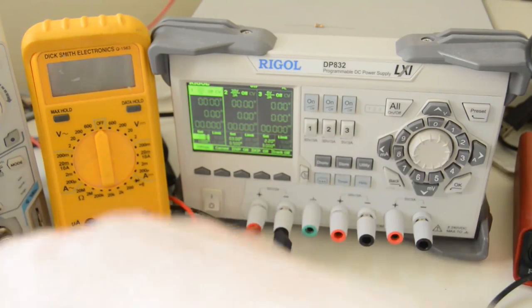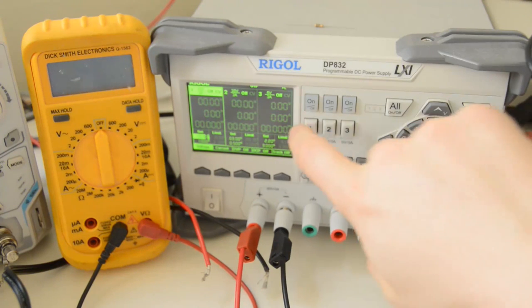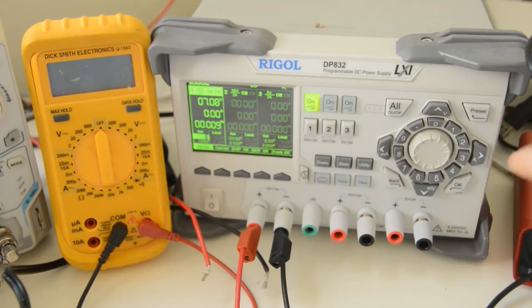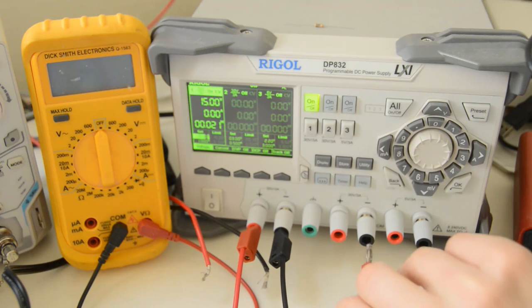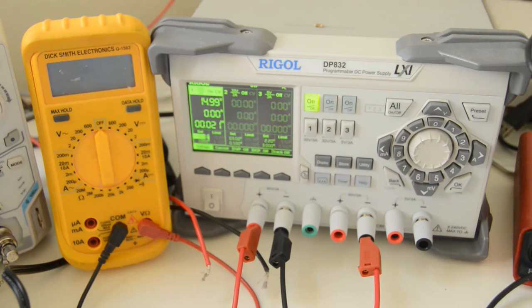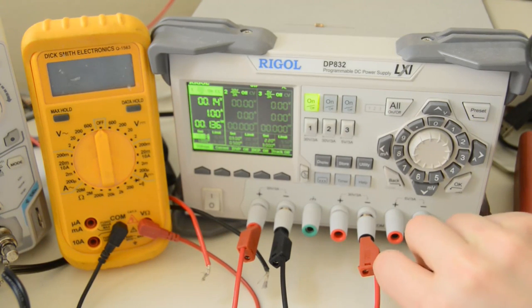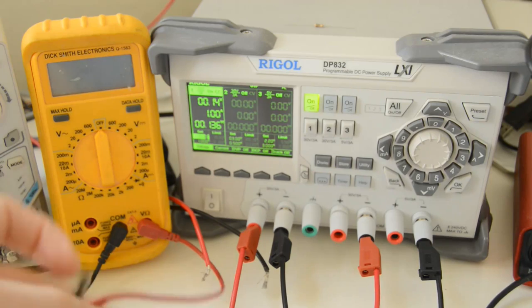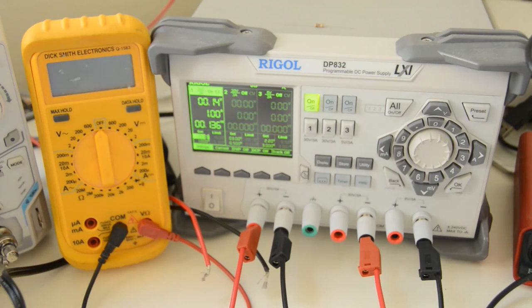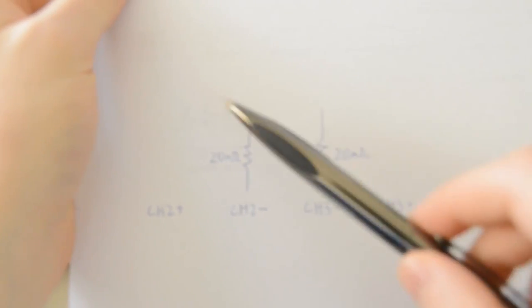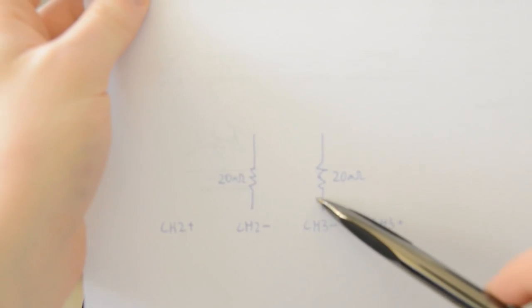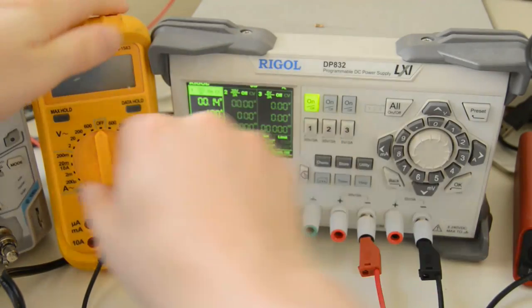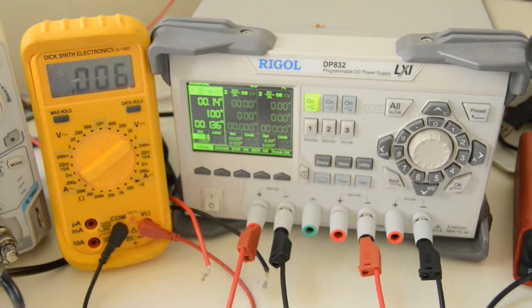So, the first test to do is to pump about an amp through one negative terminal, so there it is, through one negative terminal and out the other. Now because the current is going to go up one resistor, presumably through some sort of common ground link and down the other, we're expecting 40 milliohms resistance, which means 40 millivolts in total.